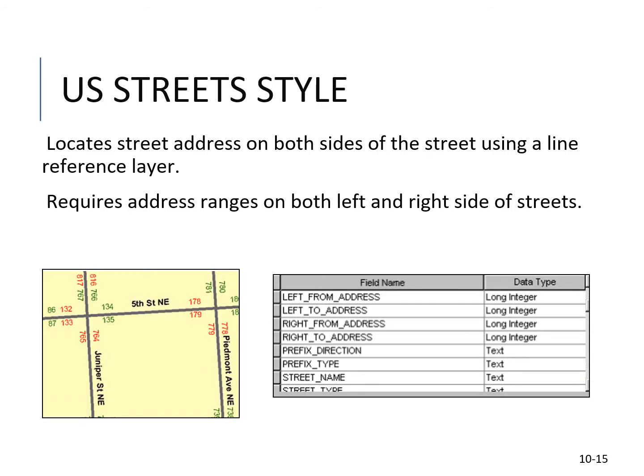The style we're focusing on is the US Street style. It locates streets and addresses on both sides of the street using a line reference layer. It requires address ranges on both the left and right sides of the streets — odd numbers on one side, even on the other — and you can see an example of the field name and data type.